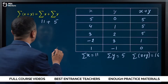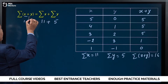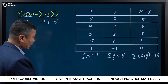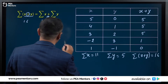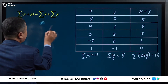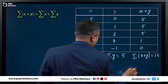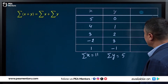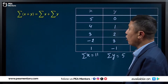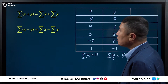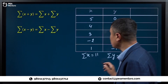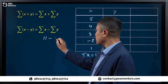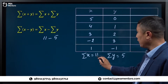Now, in the summation notation, in the linear expression, what do we have to do? How do we break the notation? In the compact form, this is very useful. We have to recall it. Now, the summation of x is 11, minus the summation of y is 5.